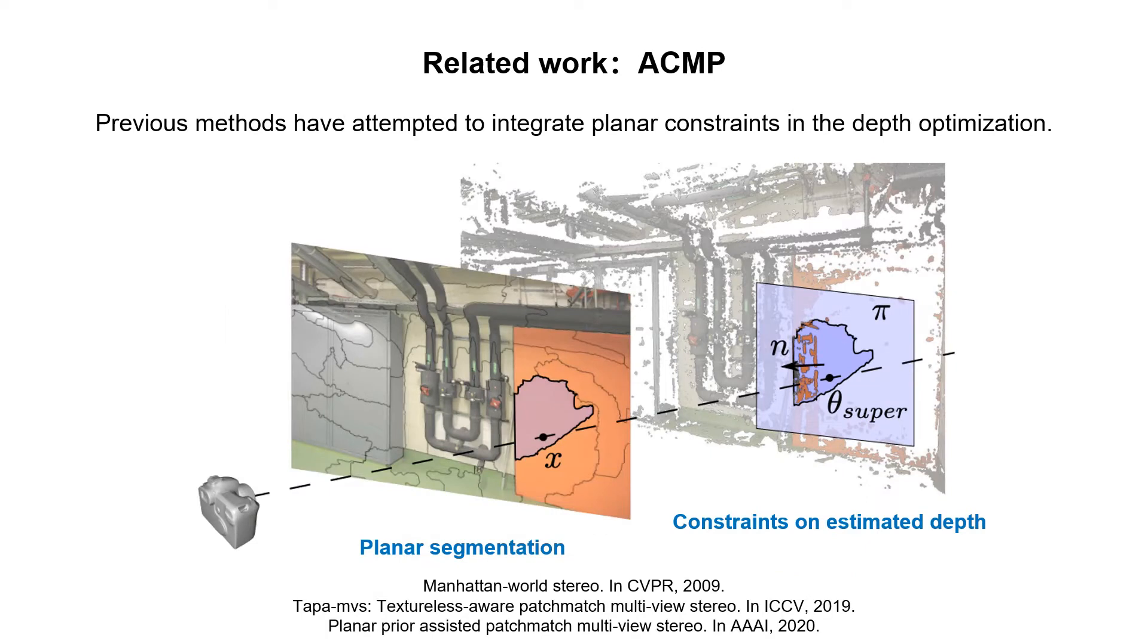Previous multi-view stereo methods have attempted to integrate planar constraints and depth optimization. They first find planar regions in the scene. Then, they construct an objective function that requires estimated depth should conform to some geometric constraints in these regions.